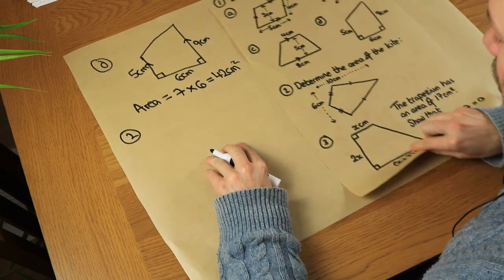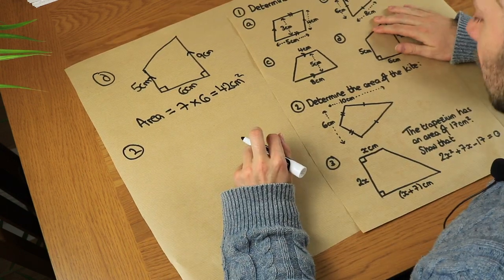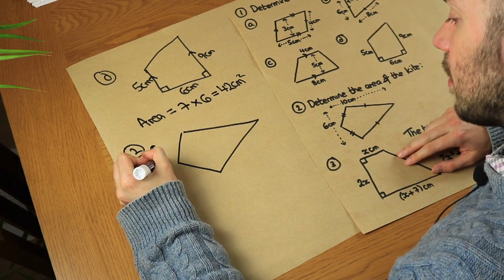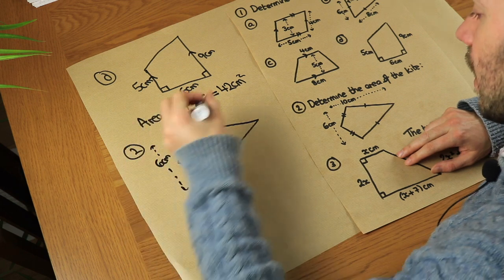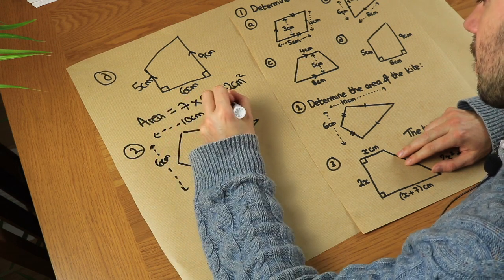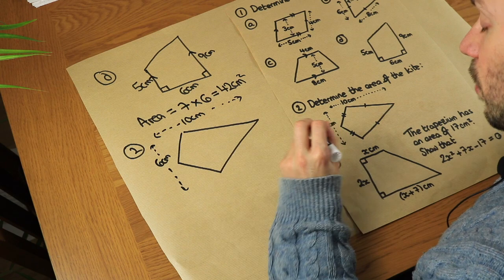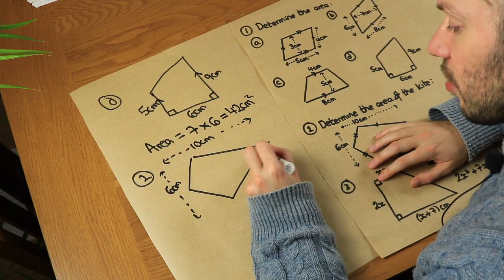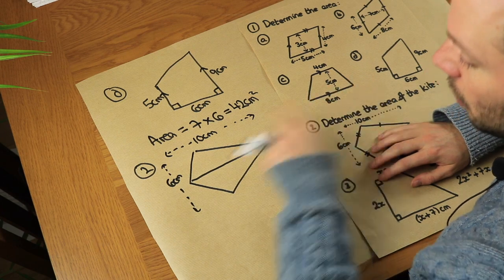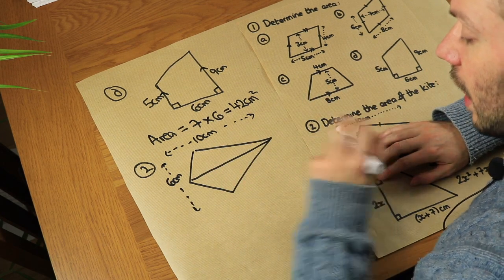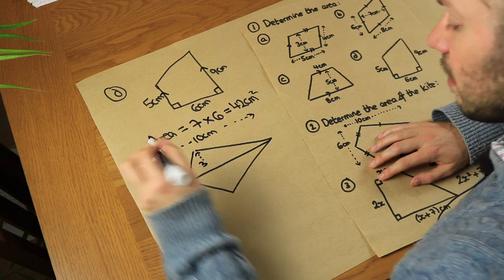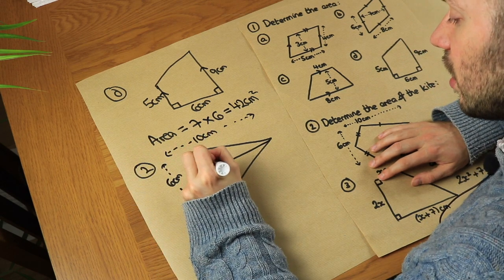Now we're going to find the area of a kite — a slightly different kind of quadrilateral. We're told the height is six centimetres and the width is ten centimetres. Now we know that a kite has a line of symmetry, so it might help to split the kite into two separate triangles.